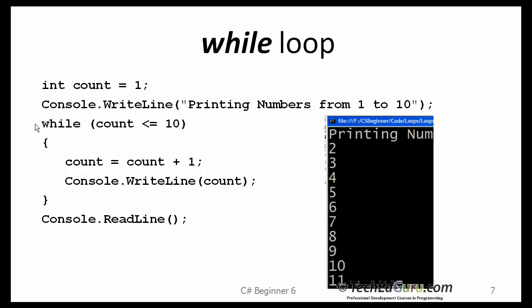When you want to run a segment of the code multiple times but you don't have a counter variable, but you only have a condition based on which you want to continue running or stop, you use the while loop. Here is the while loop. It starts with the while keyword and there is only one condition here, count less than or equals 10.